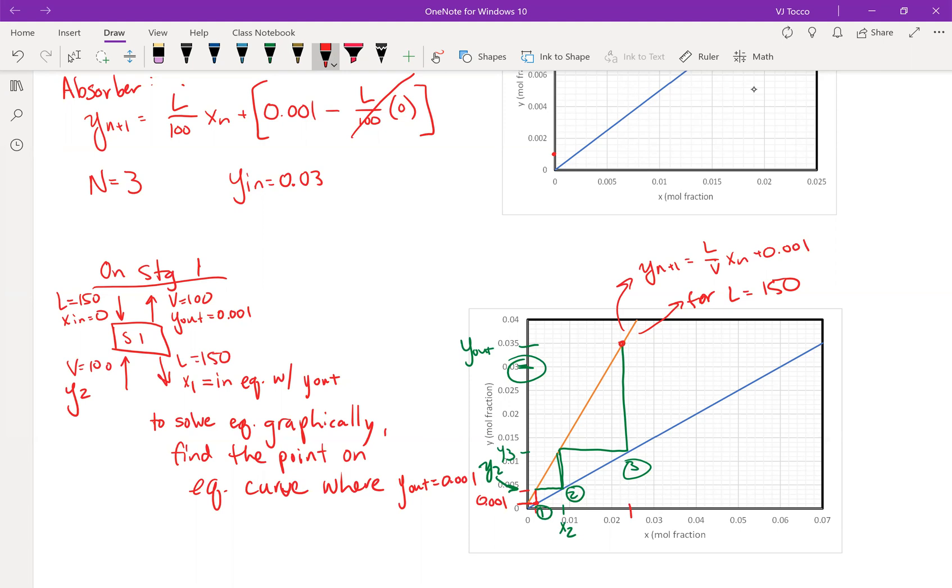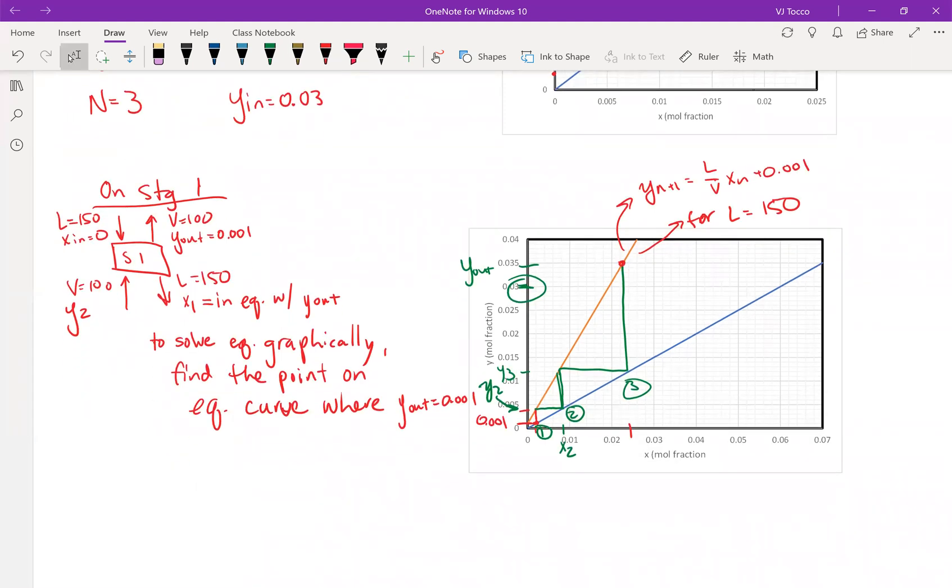So you want to start and end on the operating line. So students always get confused when you're doing graphical absorption stripping. Do you start on the equilibrium line or on the operating line? Where do you count the stages? You want to start and stop stepping on the operating line. And that is because the operating line describes the compositions of crossing streams. So at the top and the bottom of the column, I'm going to need to be on the operating line. So stages occur on equilibrium data.